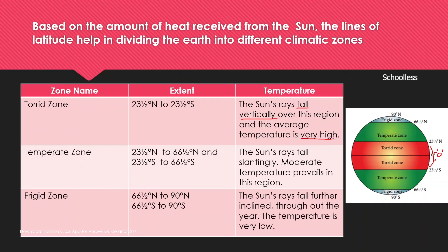The Torrid Zone extends from 23.5 degrees north to 23.5 degrees south. Sun rays fall vertically over this region, so the average temperature is very high. The Temperate Zone extends from 23.5 degrees north to 66.5 degrees north (and similarly in the south). The rays are slanting, giving moderate temperatures.